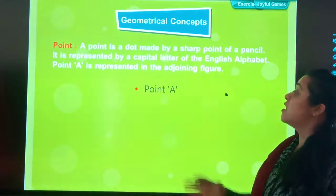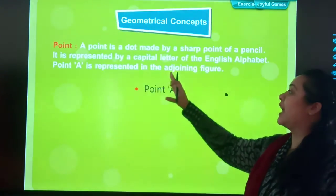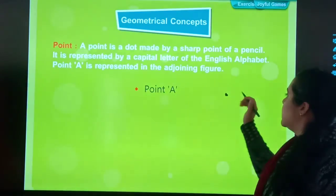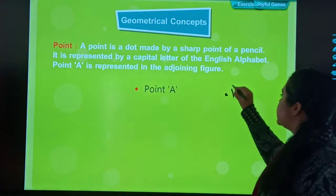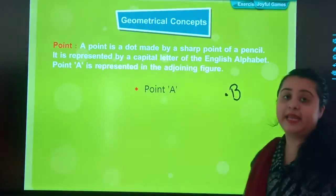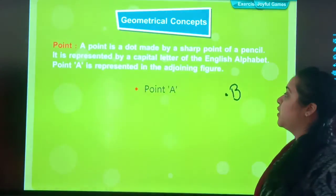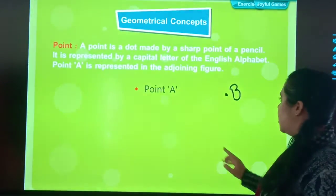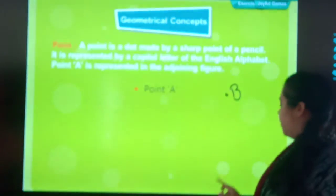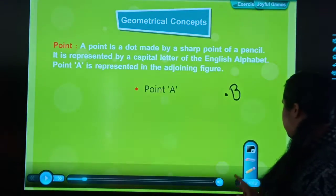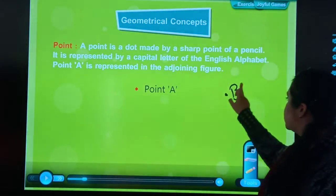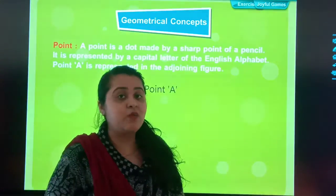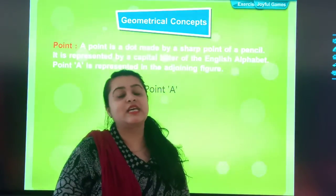When I give a name, usually it is in alphabetical order, capital order. Okay? As you can read in this, it is represented by a capital letter of the English alphabet. For example, I am giving this point a name, that is B point. Point A is represented in the adjoining figure, that is this figure. Okay students? So point is one arrangement, that will be the point. Everyone has a name. In the same way, each point has their own name.